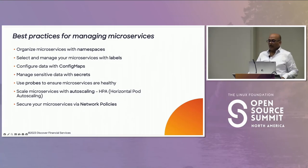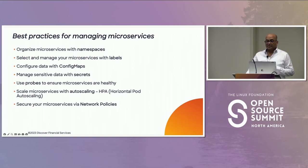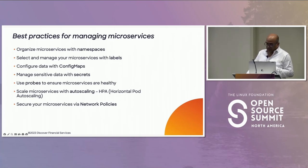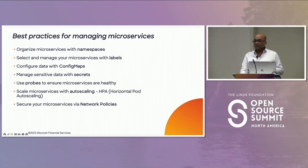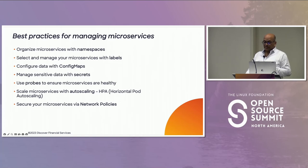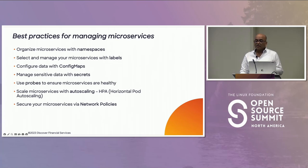While Kubernetes provides a powerful platform for managing containerized microservices at scale, it's important to follow best practices to ensure microservices are secure, scalable, and reliable. Namespaces provide a way to divide a Kubernetes cluster into smaller virtual clusters, which can be used to organize your microservices based on their function or team. By using namespaces, you can limit the visibility and access of resources to specific teams, and prevent resource name conflicts — pods or deployments with the same name in different namespaces won't clash.